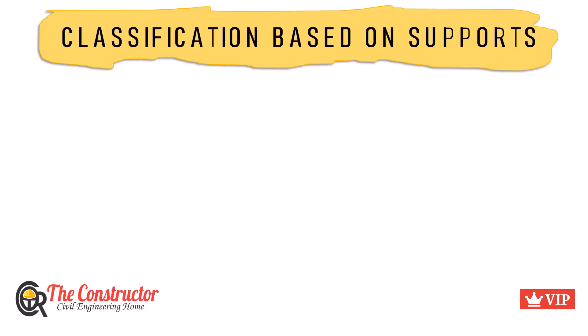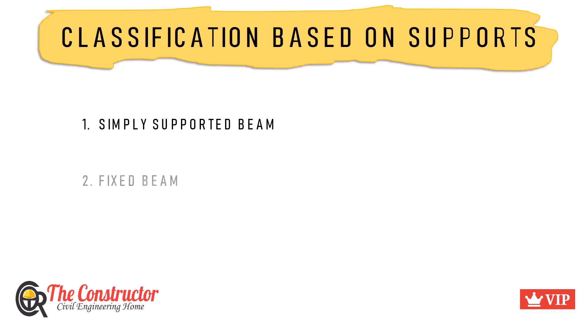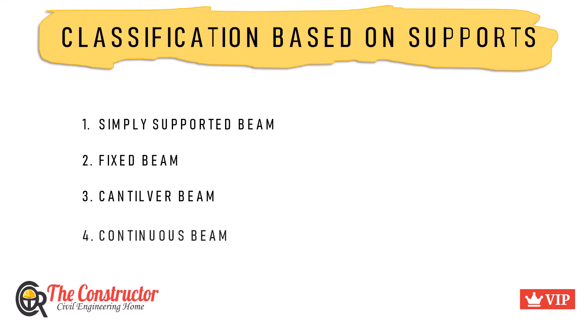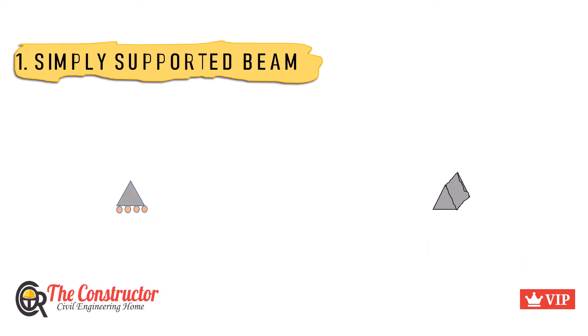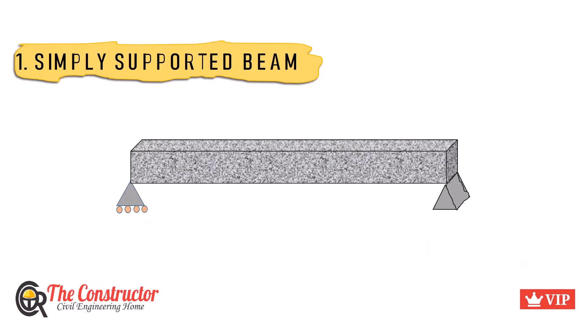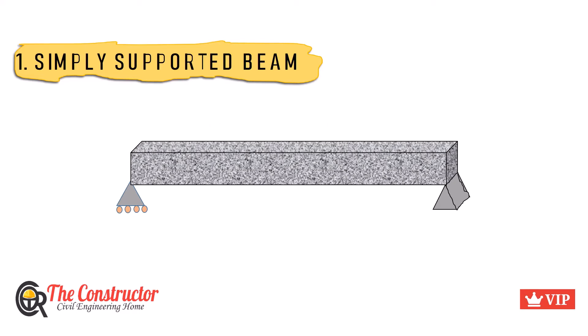Based on supports, beams can be simply supported beams, fixed beams, cantilever beams, and continuous beams. Simply supported beams lay freely over two supports and are also called freely supported beams. The supports used for a simply supported beam can either be roller support or hinge support.